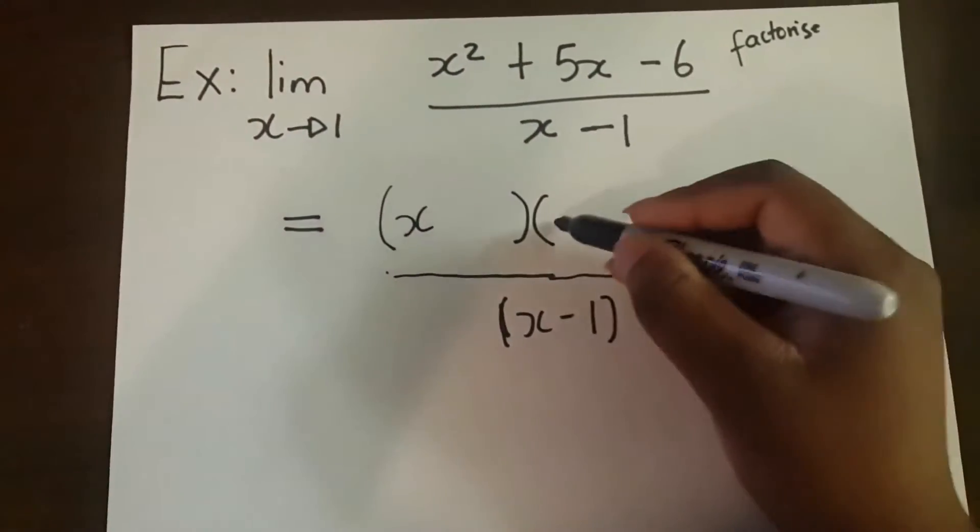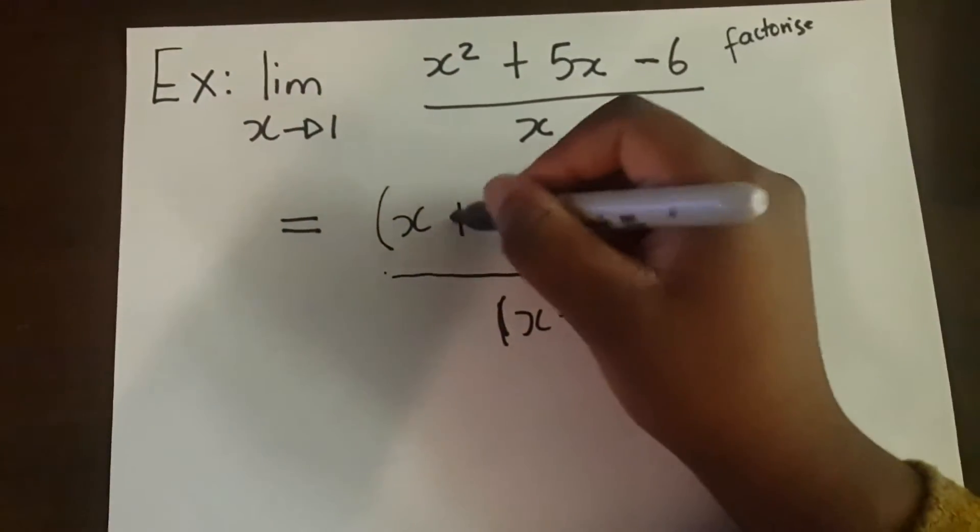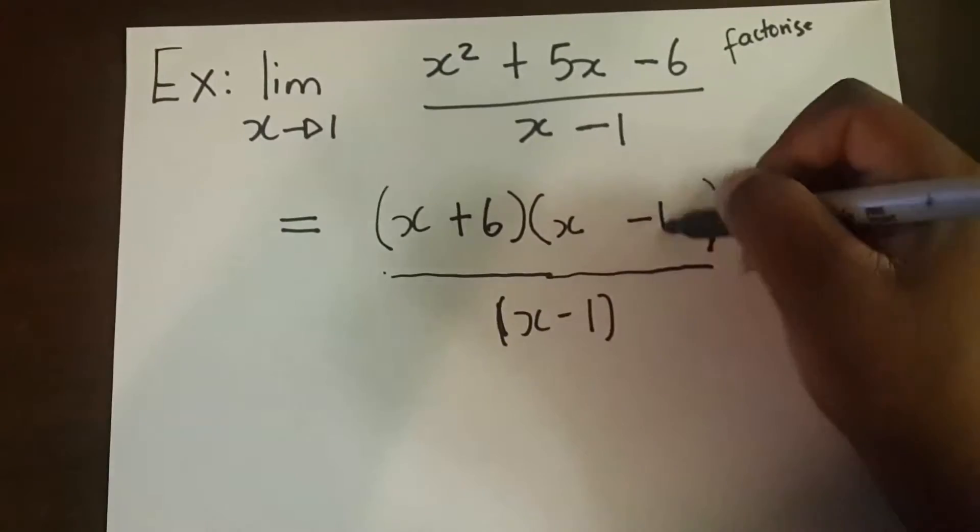So the top factorizes, you have your x, you have your x, you look at this one, the signs are not the same. So you have plus 6 minus 1.